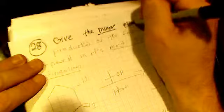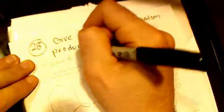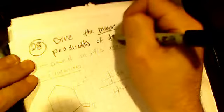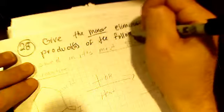All right, 28, give the minor elimination products of the following compound in its most stable conformation.